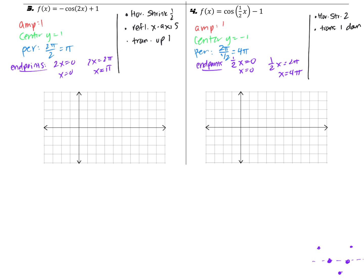I always like to start by graphing the center. For number 3, the center is y equals 1. I'll space this out since the amplitude is 1, so here's y equals 1. We're going from 0 to pi, so I start here and need 5 labeled lines. Halfway between 0 and pi is pi over 2; halfway between 0 and pi over 2 is pi over 4; halfway between pi over 2 and pi is 3 pi over 4. The amplitude is 1, so the highest the graph goes is 2 and the lowest is 0.